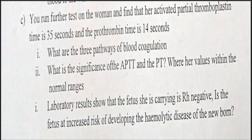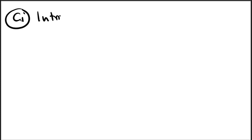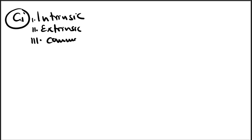Part C: further tests on the woman show activated partial thromboplastin time of 35 seconds and prothrombin time of 14 seconds. The question asks for the three pathways of blood coagulation. These are: number one, the intrinsic pathway; number two, the extrinsic pathway; and number three, the common pathway.